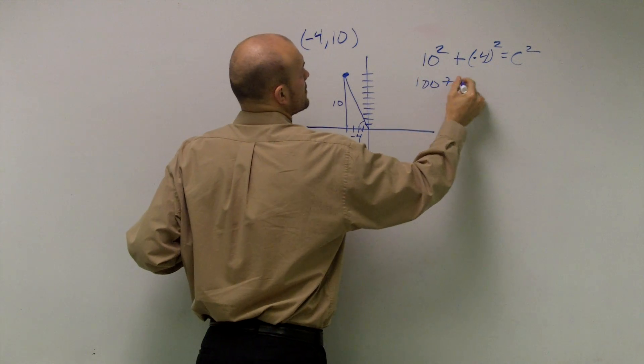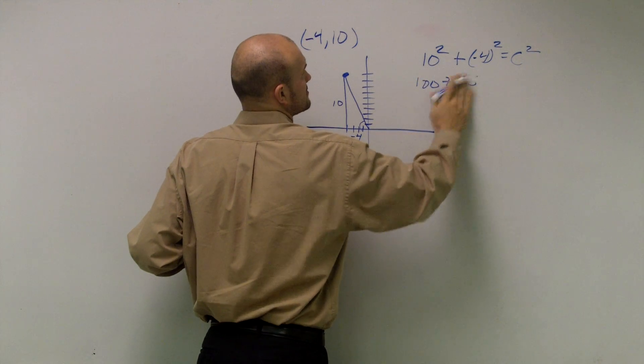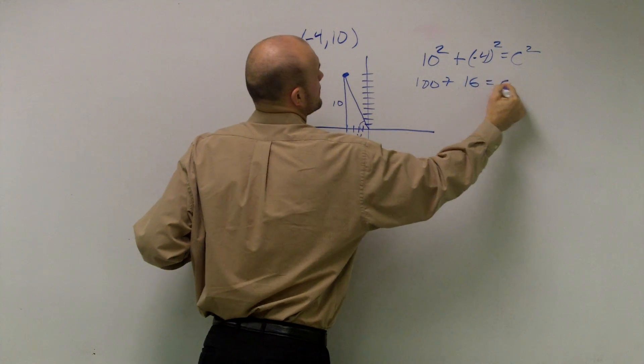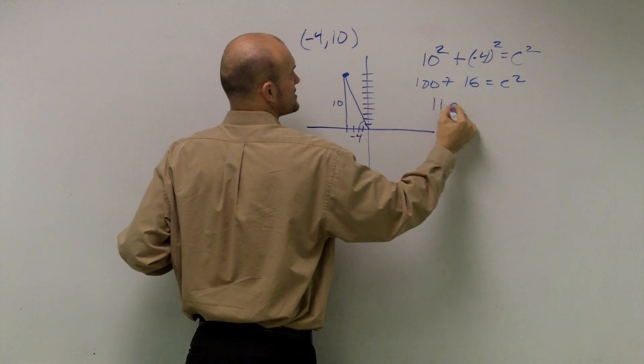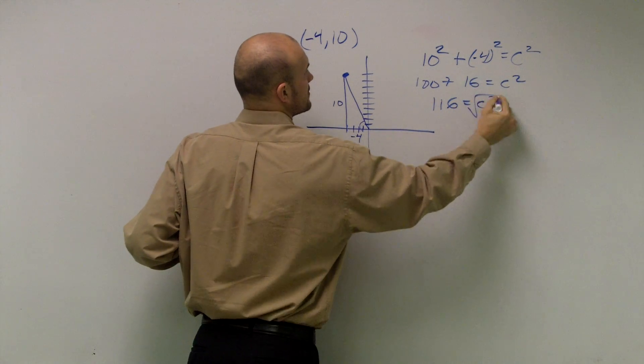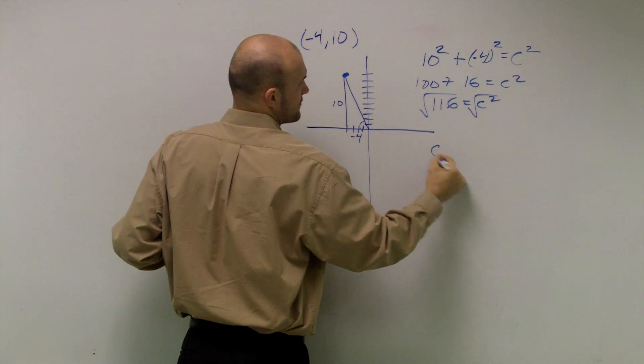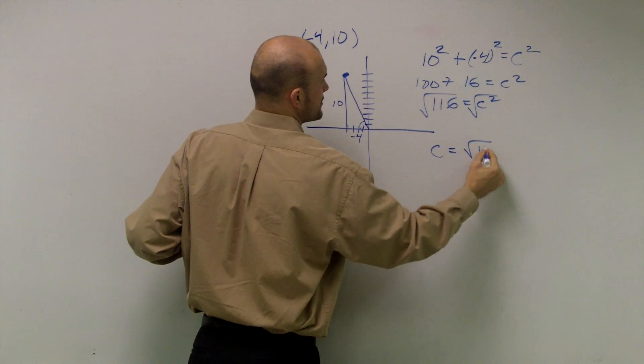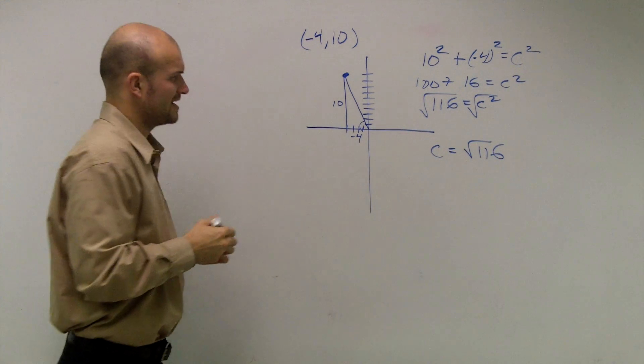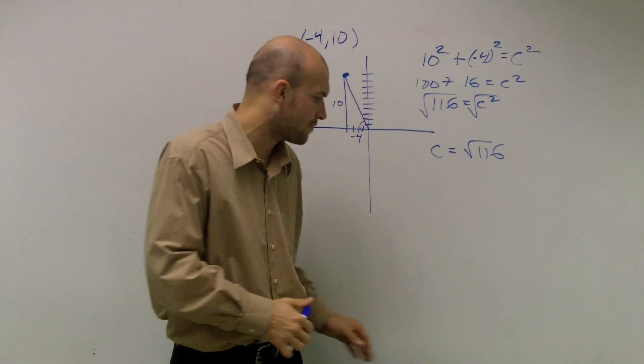So this would be 100 plus 16 equals c squared. So 116 equals c squared. Take the root. So therefore, c equals the square root of 116. And we said that 29 goes in there four times.